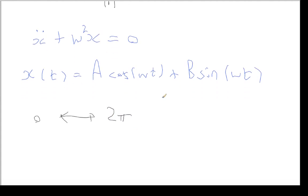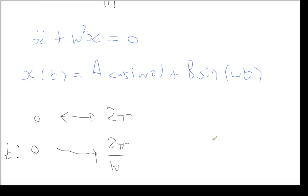If I start t at 0, t needs to go to 2π/ω to complete one full cycle. So the period of my solution is T = 2π/ω. The frequency, which is 1 over the period, is just the inverse: f = ω/2π.